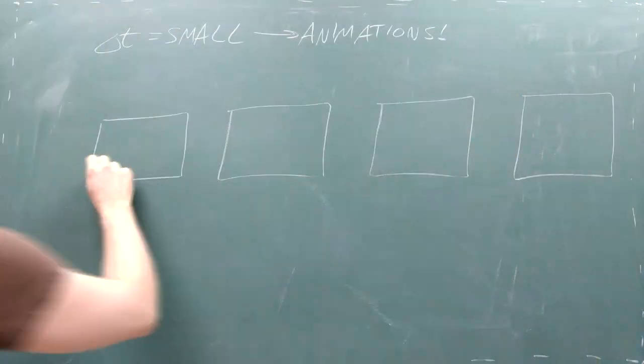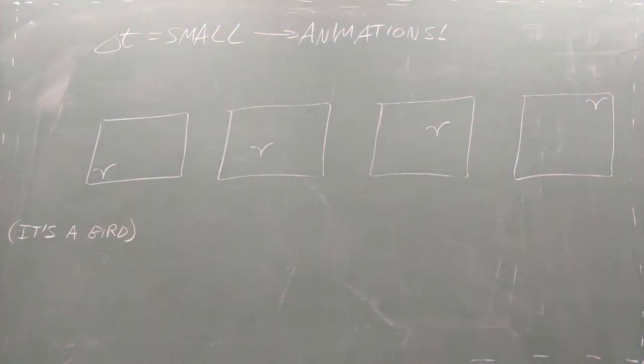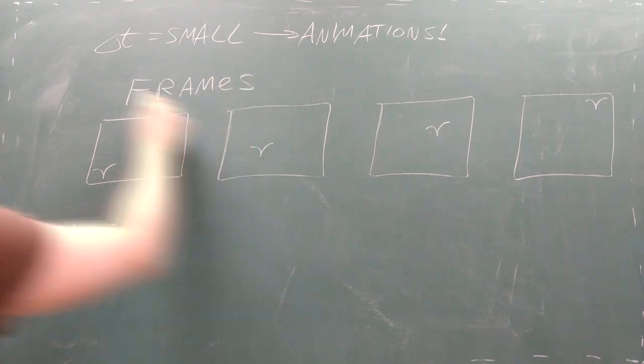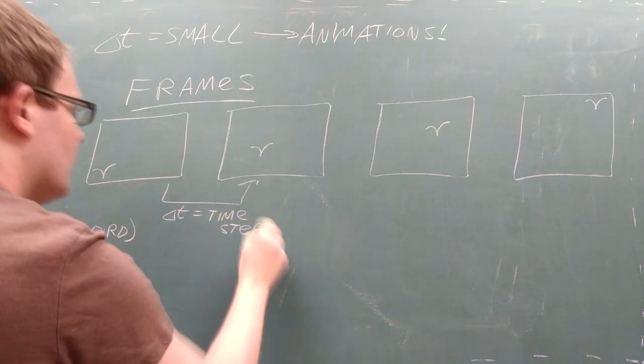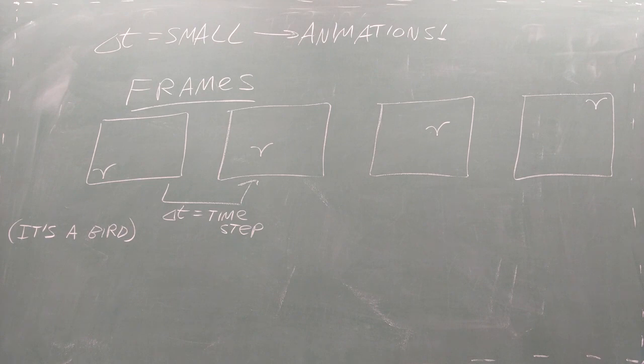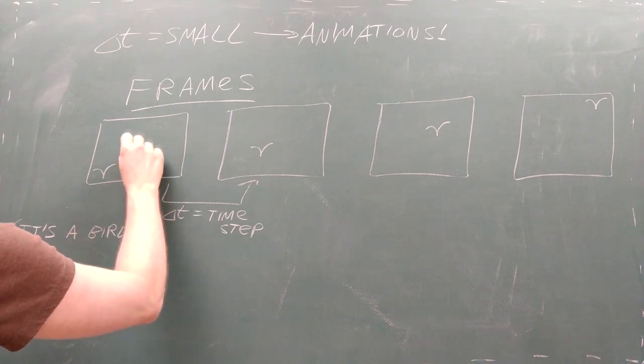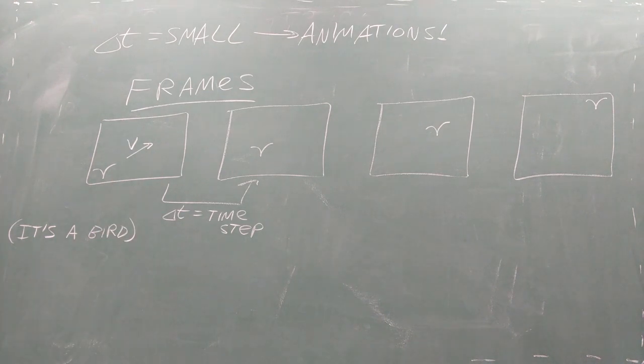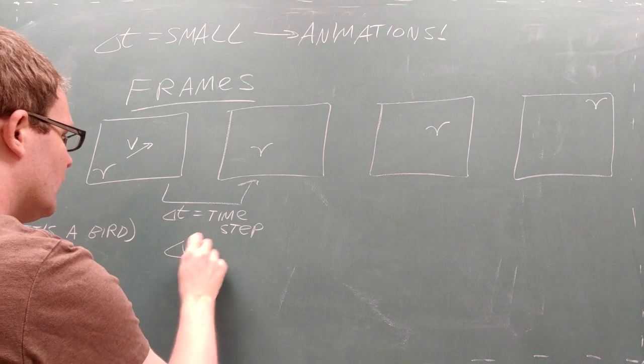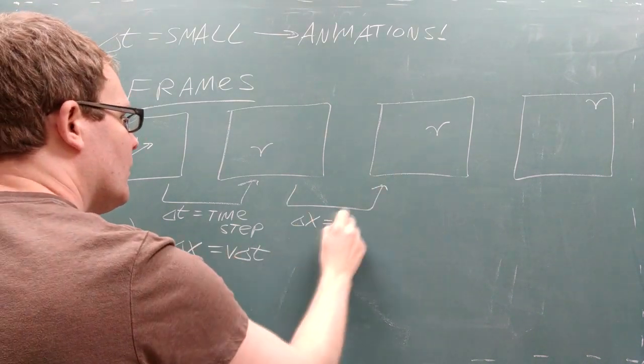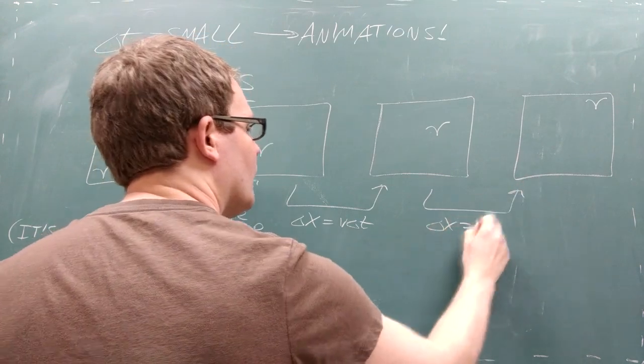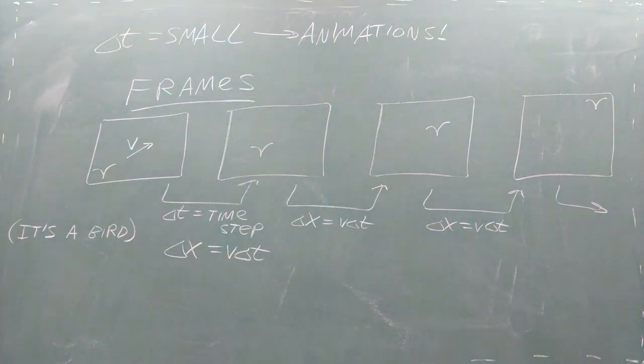Animations are created by showing very brief images that are only slightly different from each other. We call each of these images a frame and the time that each frame lasts is called the time step. This concept is useful in physics because if we know an object's velocity in a given frame and the time step, we can calculate how far the object moves in that frame as the velocity multiplied by the time step. We then repeat this calculation for the next frame and the next frame and the next frame until we're finished with our animation.